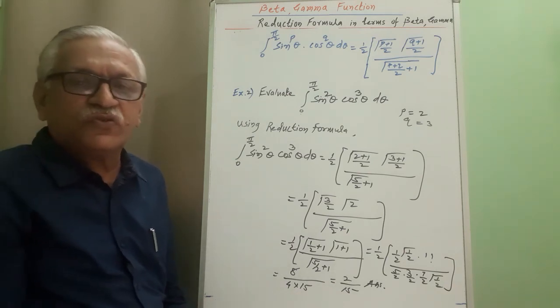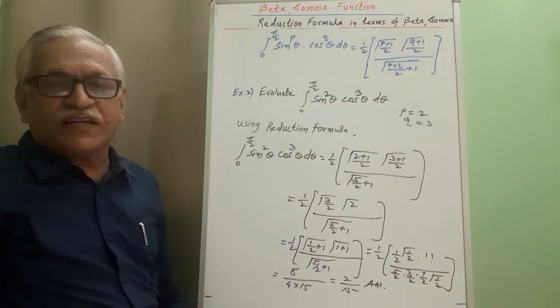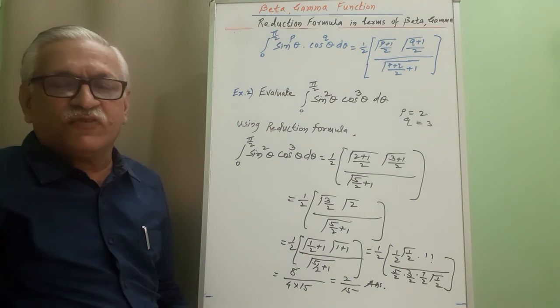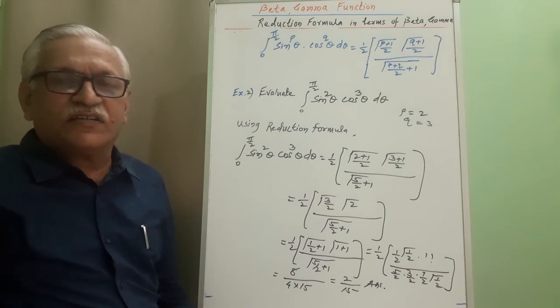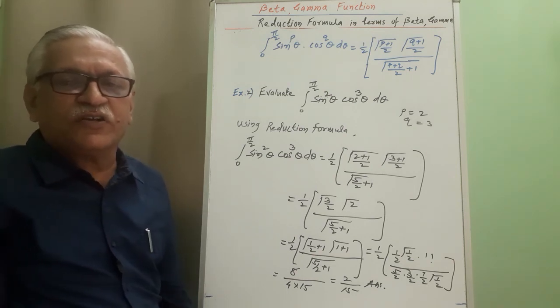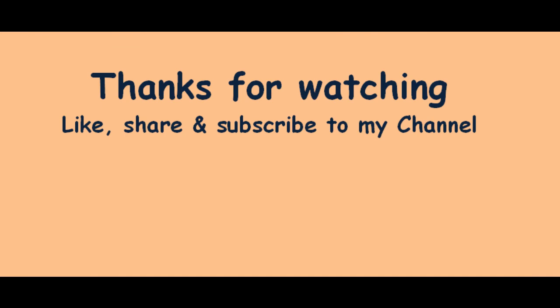In this video I have discussed two simple examples showing how to apply the reduction formula in terms of beta and gamma functions. One more problem will be discussed in my next video. If you like my video, please share it and subscribe to my channel to receive notifications for new videos — press the bell icon. Thank you for watching.